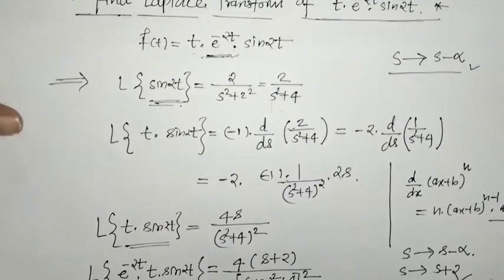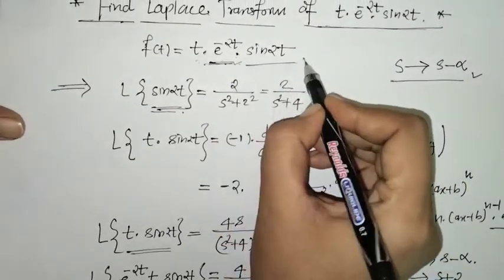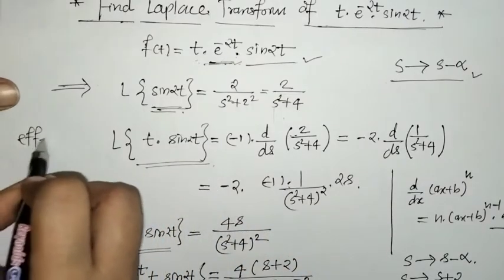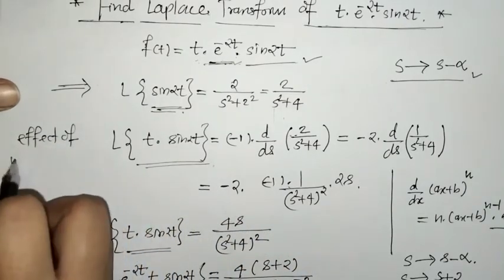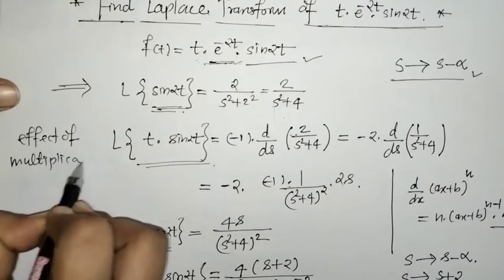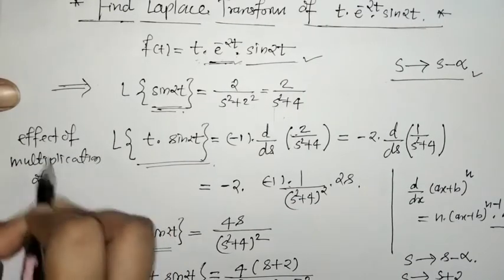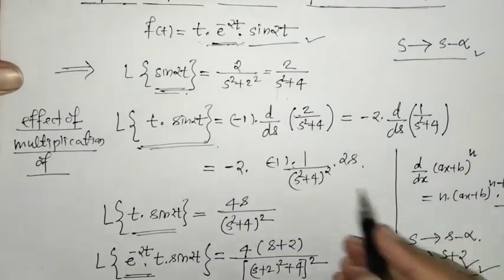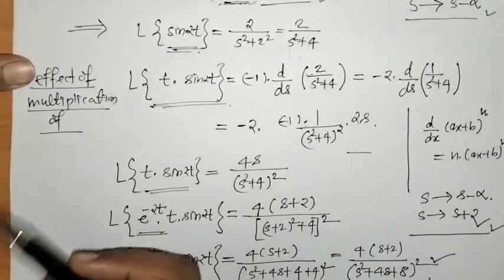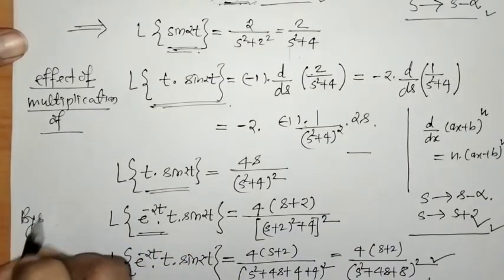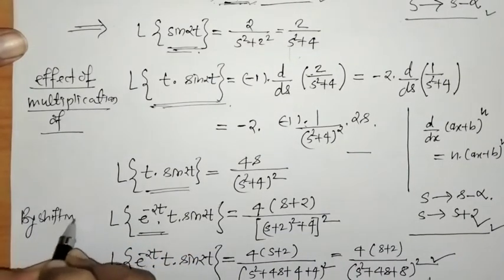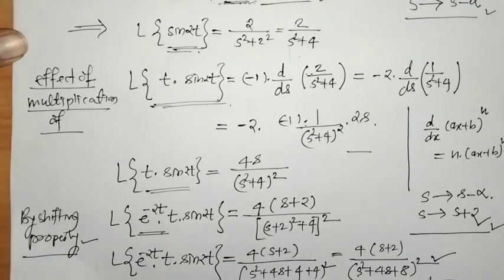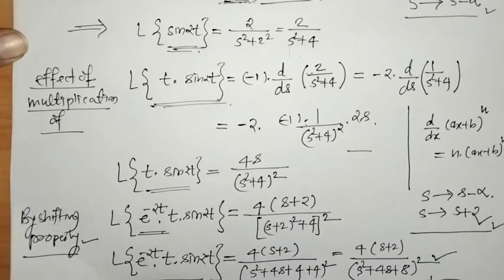So how did we proceed here? First, we found the Laplace of sin(2t), then we applied the effect of multiplication by t and got this Laplace, then we applied the first shifting property. In this way, we have proceeded for finding the Laplace of this function.